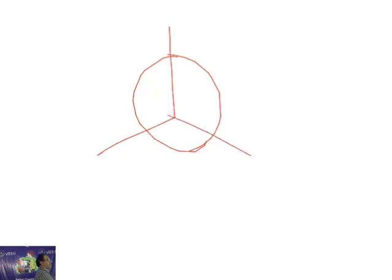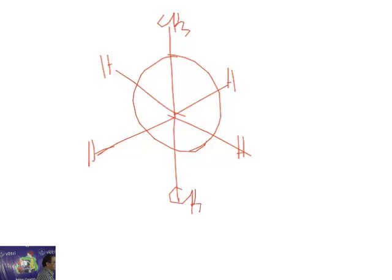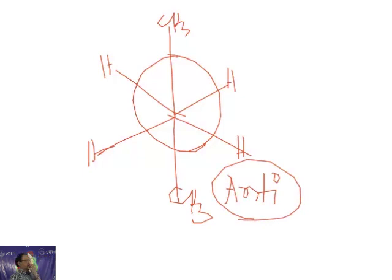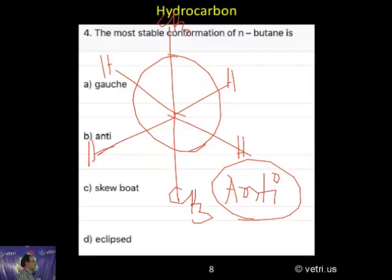I will write now, kindly note, this is CH3, H, H, H, H, CH3. This is called anti. Anti-conformation. This is called more stable conformation for N-butane. So now coming for the question, B is the correct answer.